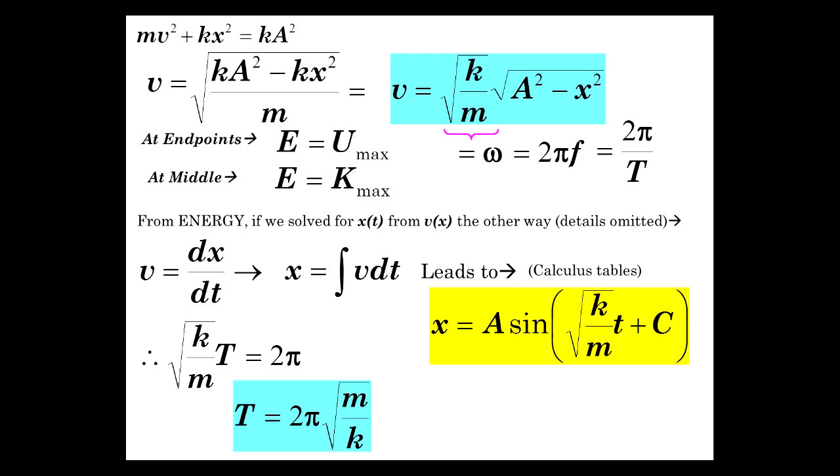And we have just derived the period of simple harmonic motion again, of a spring mass system, just like we did with the unit circle analysis. Keeping in mind that frequency is 1 over period, and frequency is also omega over 2 pi. There it is, and therefore we can solve for omega. Omega is 2 pi over T, so 2 pi divided by this gives us square root of k over m, which we also saw earlier in the unit circle analysis.